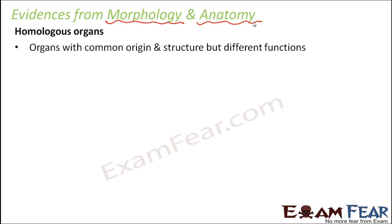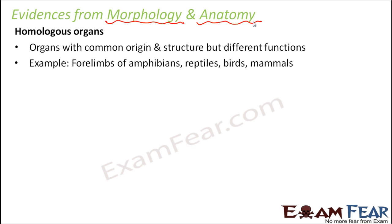One of the best examples is the four limbs of amphibians, reptiles, birds, and mammals. These are all very different from each other — if you compare a human being with a crow, a lizard, or a frog, they look extremely different in external structure, behavior, and everything. They all belong to different species altogether.